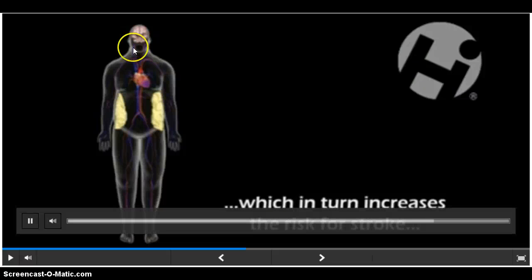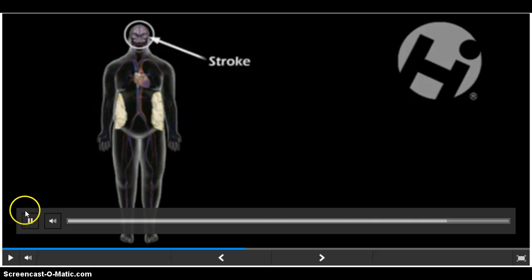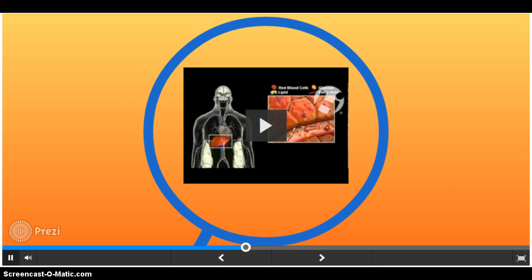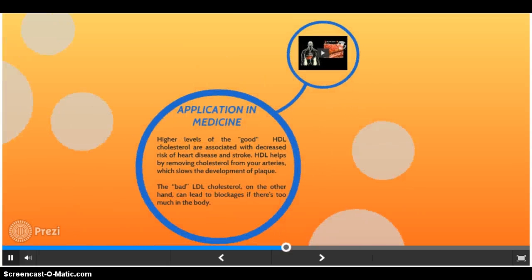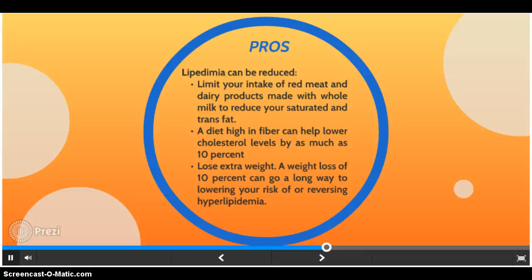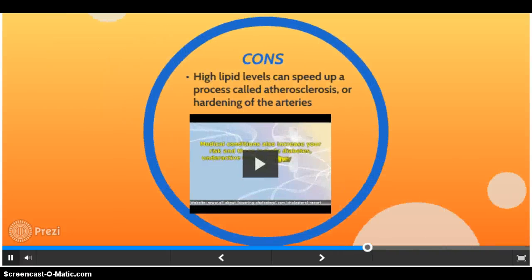This increases the risk of a stroke. Lipidemia can be reduced by limiting your intake of red meat and dairy products made with whole milk to reduce your saturated and trans fat. A diet high in fiber can help lower cholesterol levels by as much as 10%. A weight loss of 10% can go a long way to lowering your risk of or reversing hyperlipidemia. High lipid levels can speed up a process called arterial hardening of the arteries.